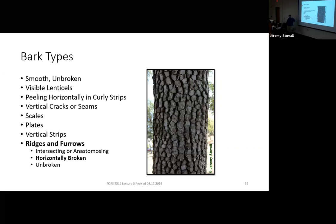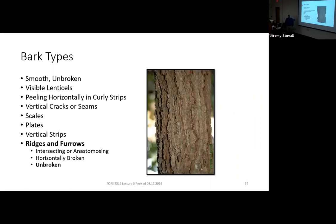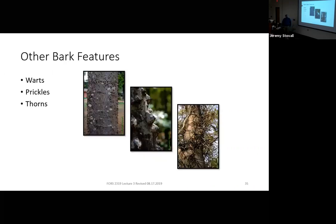Some species have vertical ridges that are also split apart horizontally — that's common persimmon, which we'll get in week two. You can see how distinct that bark is; it looks like a gator back. Sassafras has ridges that are unbroken — not horizontally broken and not anastomosing — so that's our final northeastern category. When you start looking at our southern trees, we can add more options. We have warty bark, like on sugarberry — there's nothing wrong with this sugarberry, that's just what they look like. We'll learn this in lab this week. And then we've got prickles like on Hercules club, and thorns like on water locusts and honey locusts.